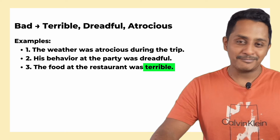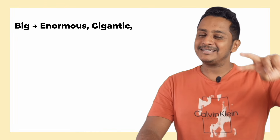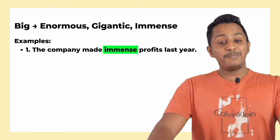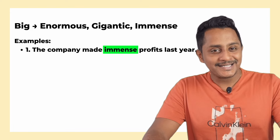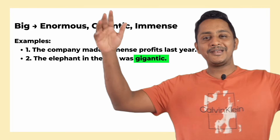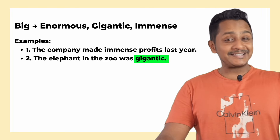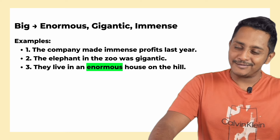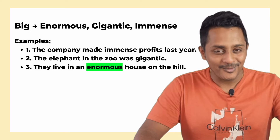The next word is 'big,' a very common word with three alternatives: enormous, gigantic, and immense. For example, instead of 'the company made big profits last year,' say 'the company made immense profits.' Instead of 'the elephant in the zoo was very big,' say 'the elephant was gigantic.' Instead of 'they live in a big house on the hill,' say 'they live in an enormous house on the hill.'